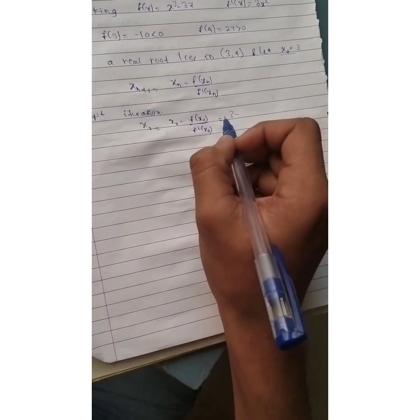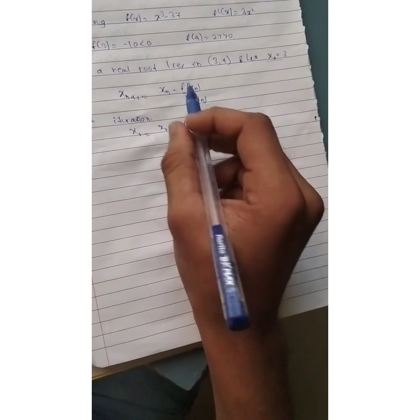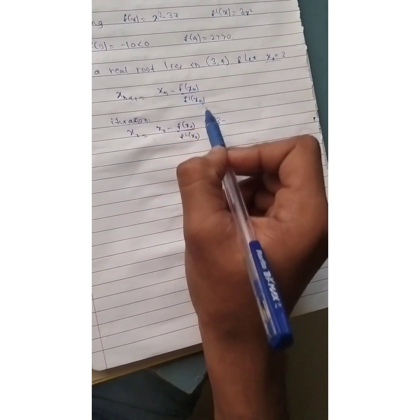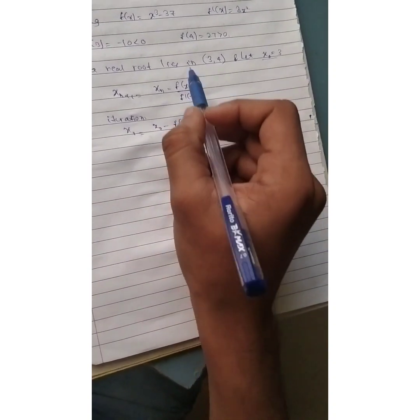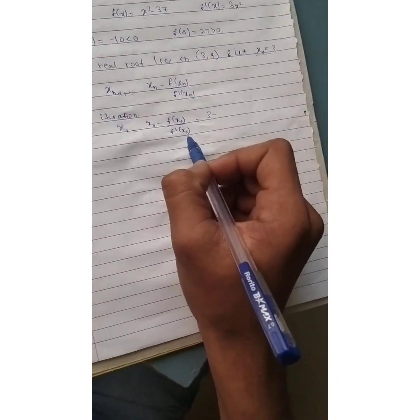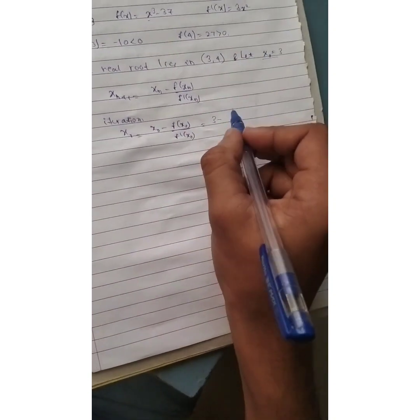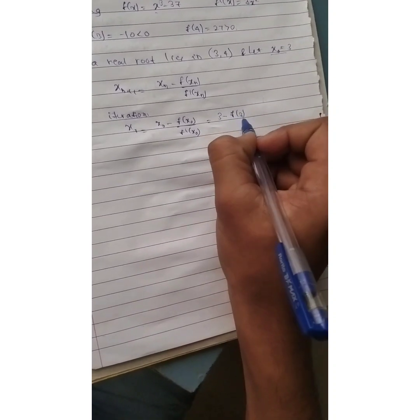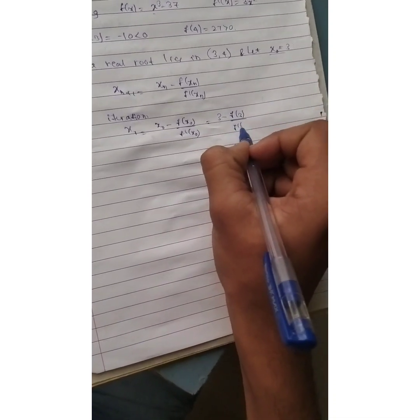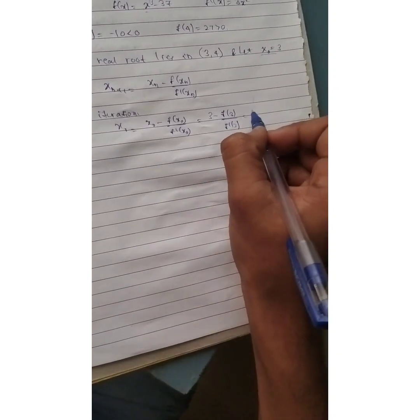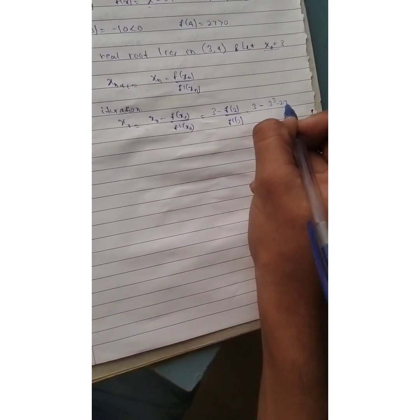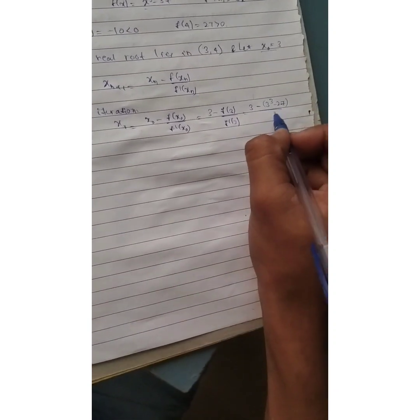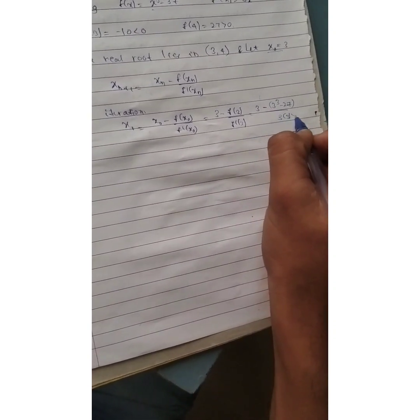When you substitute, f of x, x is equal to 0 in this and x is equal to 0 in f dash of x, we will get 3 minus 3 cube minus 27 divided by 3 into 3 square.